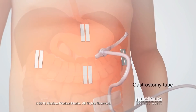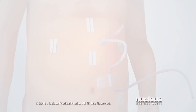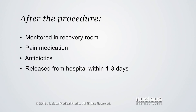Finally, the surgeon will close the incisions with dissolvable sutures or skin closure strips. After the procedure, the child will be taken to the recovery room for monitoring. Pain medication will be given, and the child may continue to receive antibiotics through the IV. Within one to three days, the child will be released from the hospital. If the child has a feeding tube, the surgeon will remove it when he or she is able to eat normally.